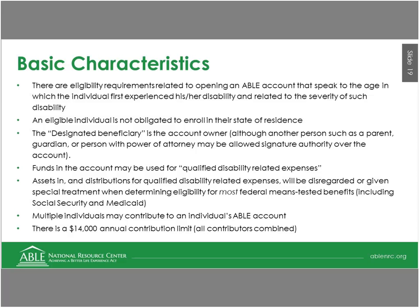Assets in and distributions for qualified disability-related expenses will be disregarded when determining eligibility for most federal means-tested benefits, including Social Security benefits and Medicaid. This is an incredible benefit because many individuals who receive supports through Medicaid are not allowed to have more than $2,000 worth of assets at any given time, or their eligibility for those vital supports could be vulnerable. This is an incredible opportunity for people with disabilities to save significant amounts of funds for disability-related expenses.